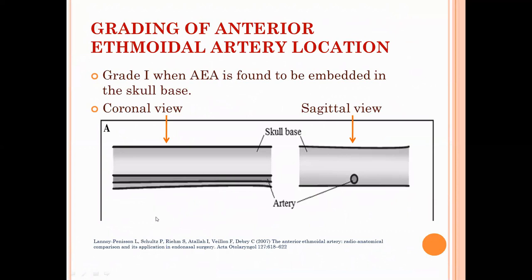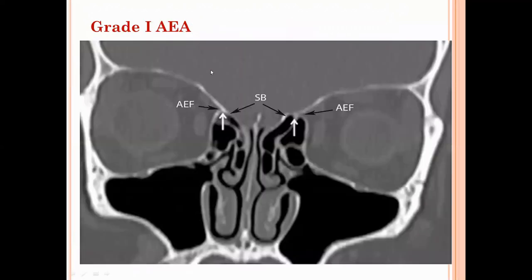According to the Lennon-Passignal et al. grading system, there is a classification of the anterior ethmoidal artery location during its course to the ethmoidal area. In Grade 1, the anterior ethmoidal artery is found to be embedded within the skull base, as shown in the figure in both coronal and sagittal views. The coronal section of the CT scan shows the anterior ethmoidal artery lying within the skull base area, indicated by the arrow.